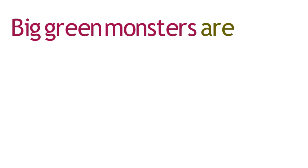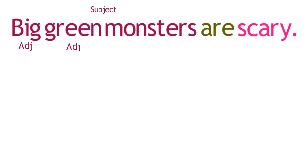For example, in this sentence, the subject is the noun phrase Big Green Monsters. Here, the adjectives Big and Green both modify the noun Monsters, which is the head of that phrase. So these two adjectives are dependent upon this noun.